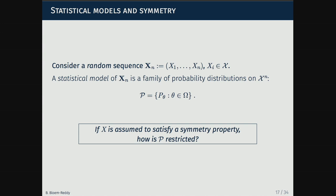Capital letters are random variables: I'm inputting a random sequence of length n, and a statistical model of that sequence is just a family of probability distributions parameterized somehow. The corresponding question to what I asked before is: if our random variables' distributions are assumed to satisfy a symmetry property, how is the model restricted? That question has a much longer history going back at least to Laplace, and more recently since the 1930s there's been a very active literature in probability and statistics.